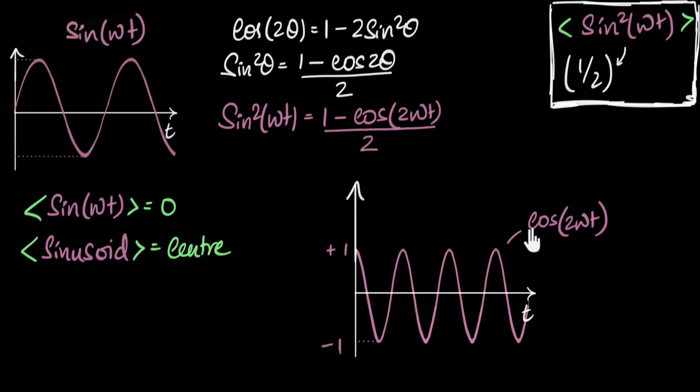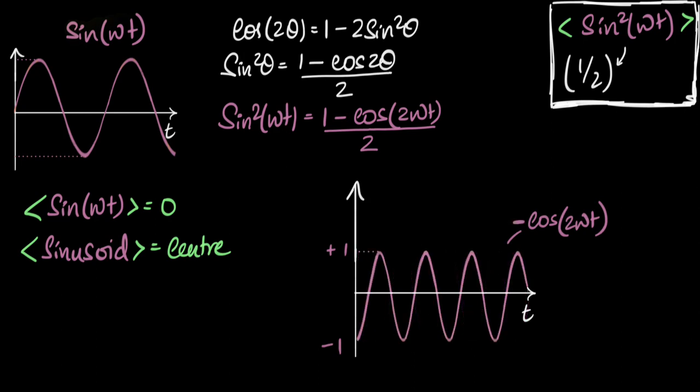Now let's draw minus cos. What would minus cos look like? Just take every point and multiply by minus one. That means this point, when I multiply by minus one, would come down. This point, when I multiply by minus one, will come up, and so on. So the whole thing will flip. It's gonna flip like this. This is minus cos 2ωt. It's still a sinusoid.